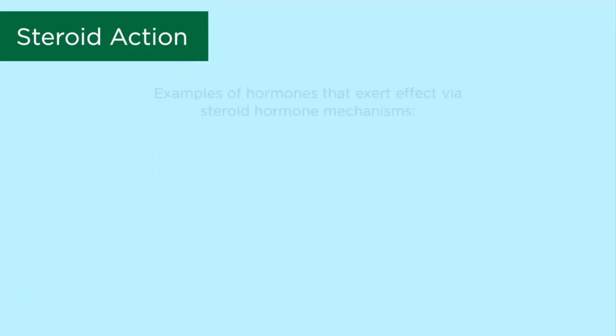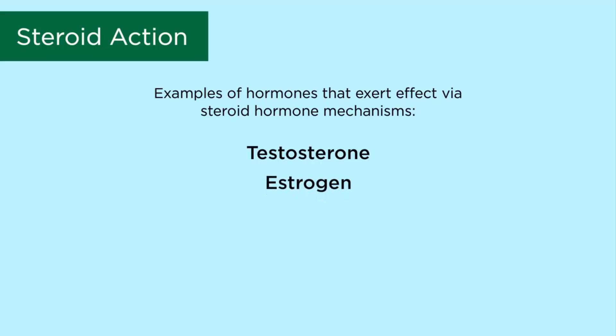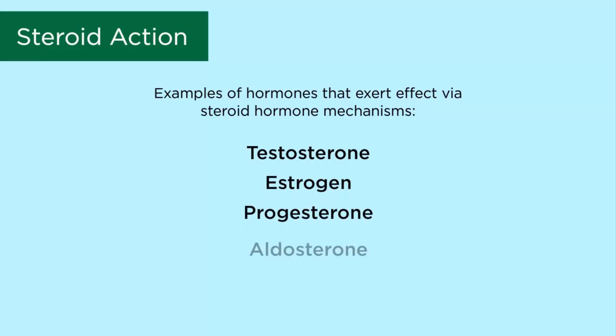Examples of hormones that exert effects via steroid hormone mechanisms are testosterone, estrogen, progesterone, aldosterone, and calcitriol.